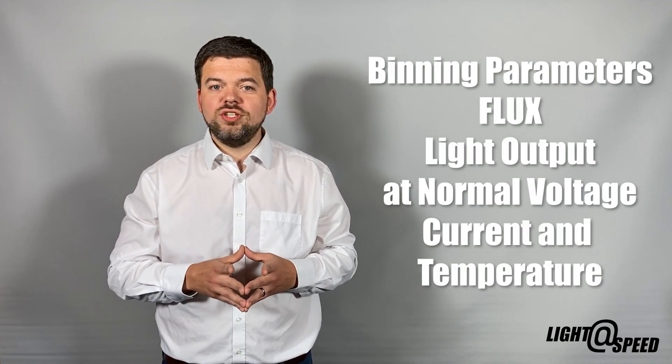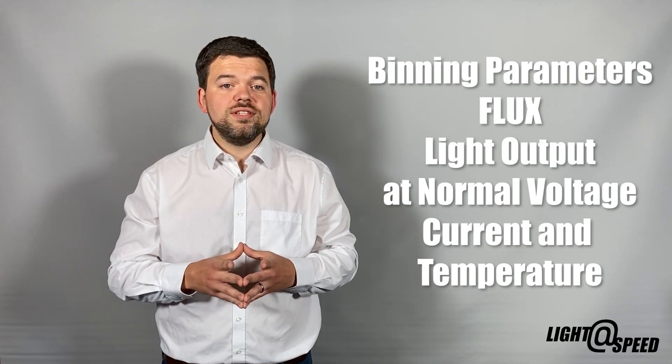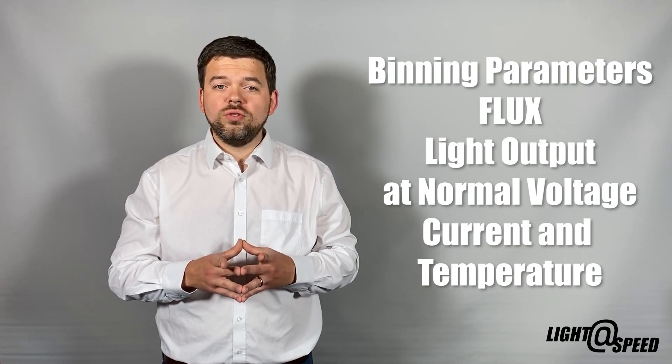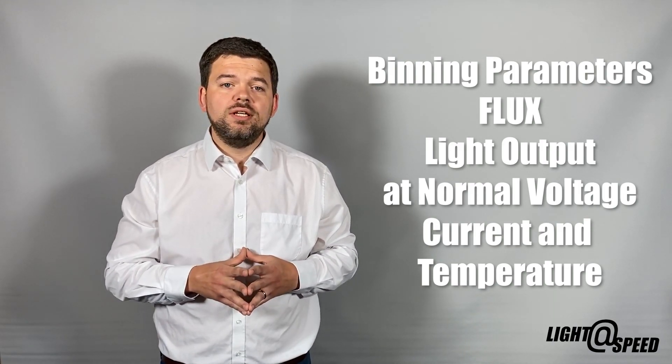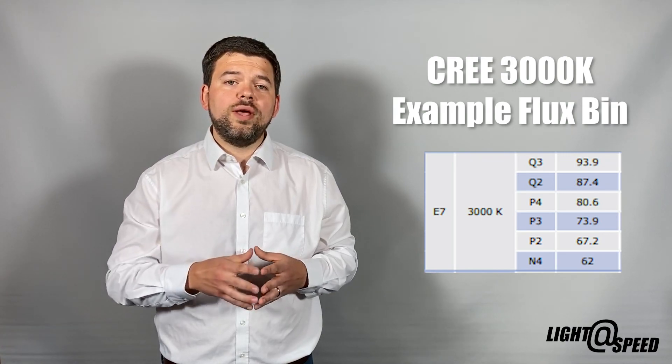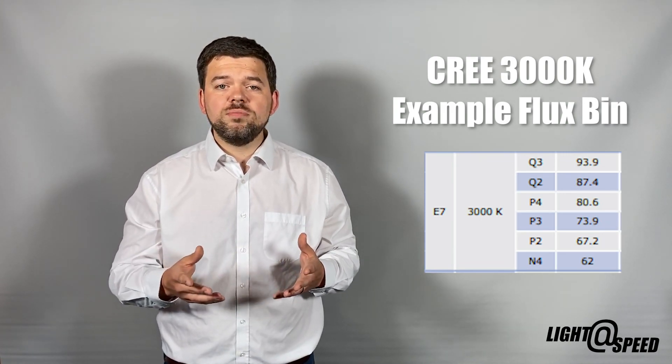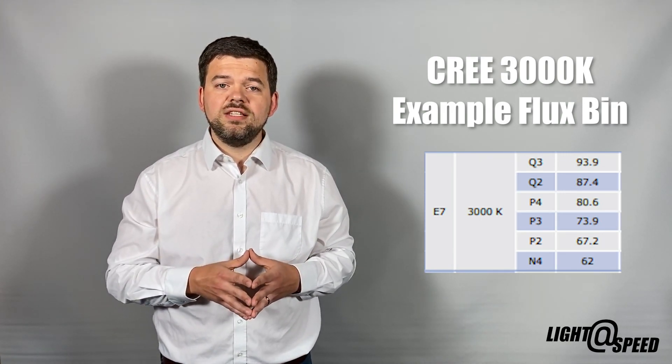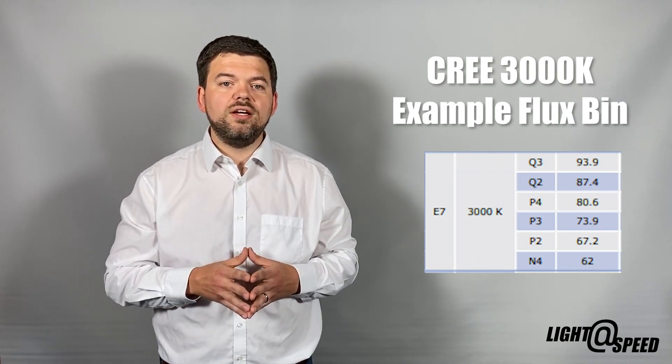Flux. Each chip is measured for the amount of light it produces at its normal voltage, current and temperature. These can range quite widely from chip to chip and it's not unheard of for chips to be 50% brighter than a lower output chip, but the higher the flux bin the more exclusive and expensive it is but the more efficient they are.